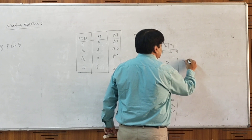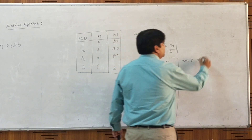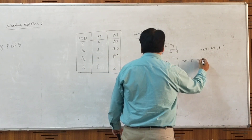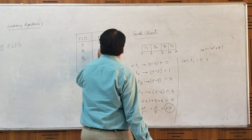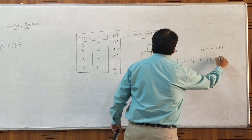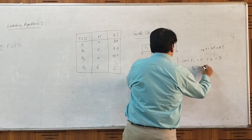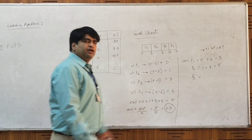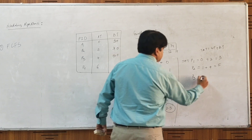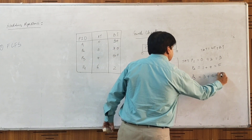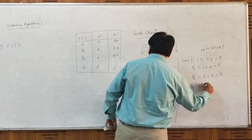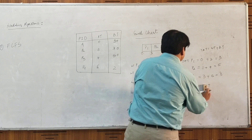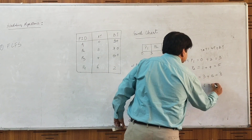The turnaround time for each process equals the waiting time of that process plus the burst time of that process. For P1: waiting time 0 plus burst time 3 gives turnaround time of 3. Turnaround time of P2: 1 plus 4 equals 5. Turnaround time for P3 is its waiting time of 3 plus its burst time of 5, giving 8.